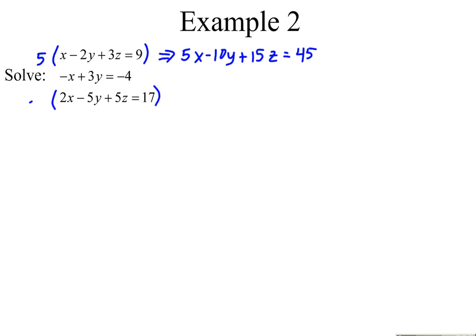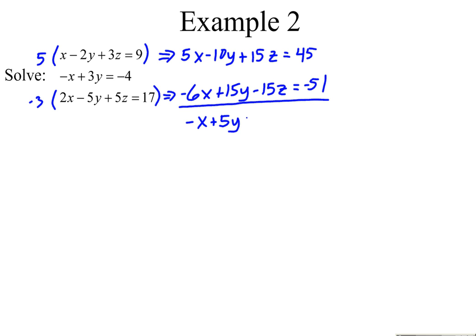Then I'm going to multiply the bottom equation by negative three. We get negative 6x plus 15y minus 15z equals negative 51. Adding those two equations, we get negative x plus 5y — the z's cancel — which equals negative 6. Now I've reduced it to two equations, two unknowns. Using the middle equation and multiplying by negative one, we get x minus 3y equals 4, setting up elimination of the x's.